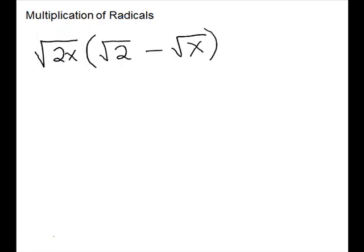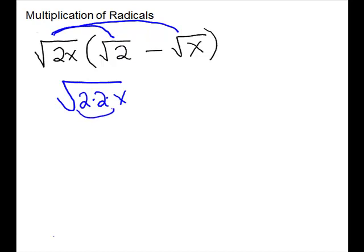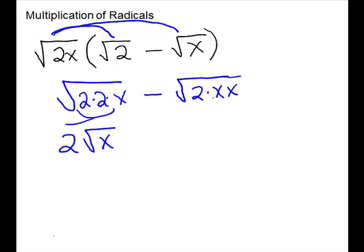Here is another distribution problem. We're going to take square root of 2x times square root of 2, and then times minus square root of x. For the first term, we get square root of 2 and another 2 and an x. The 2's make a perfect square — it's 4 — so square root of 4 is 2. Take one 2 out, and keep the x since it doesn't have anything to go with it. When we distribute to the second term, we get a 2 and two x's. The x's make a square, so one x goes out. The 2 is left, and that is our simplified answer.